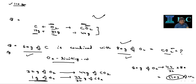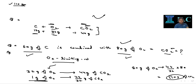A student once asked: why do we always use the limiting reagent to find the product, and not the excess reagent? Because in the excess reagent, some amount is left over — it doesn't completely contribute to the product. So we only use the limiting reagent because it is 100% utilized to form the product. That's why it gives an accurate result.